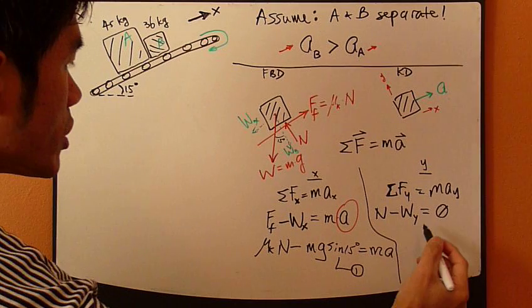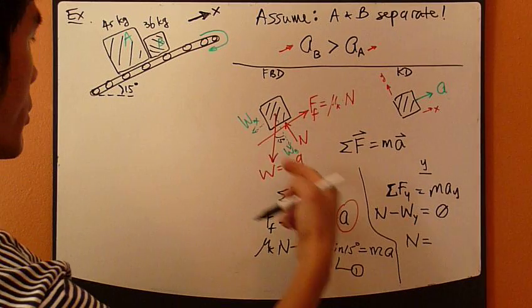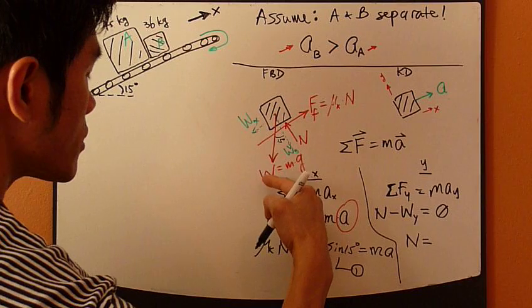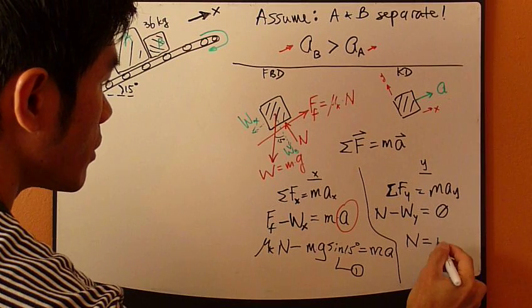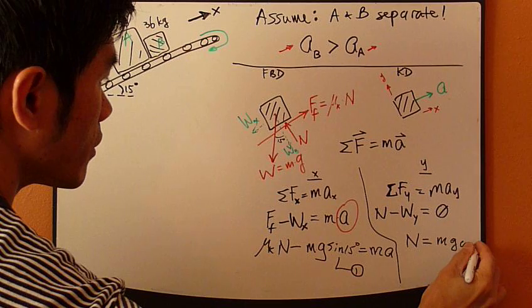Now for this equation, simply move this term over. W_y is mg, so W_y is mg cosine 15.